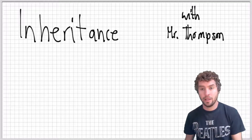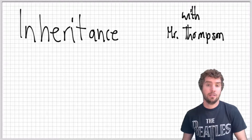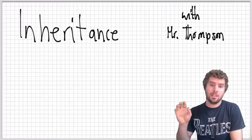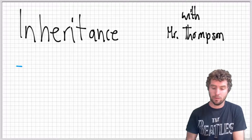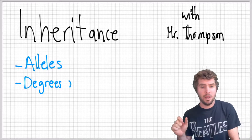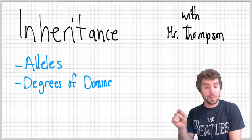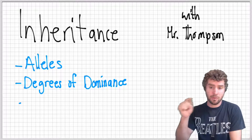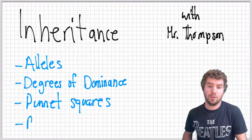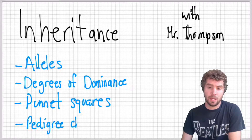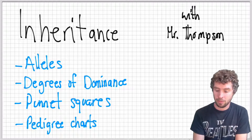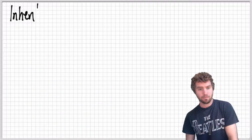Mr. Thompson here with a science video lesson, continuing on genetics, talking today about inheritance. We'll be covering alleles — that'll be the first big thing — degrees of dominance when it comes to alleles, and we'll look at Punnett squares and pedigree charts. Table of contents down below as usual. Let's get into it.